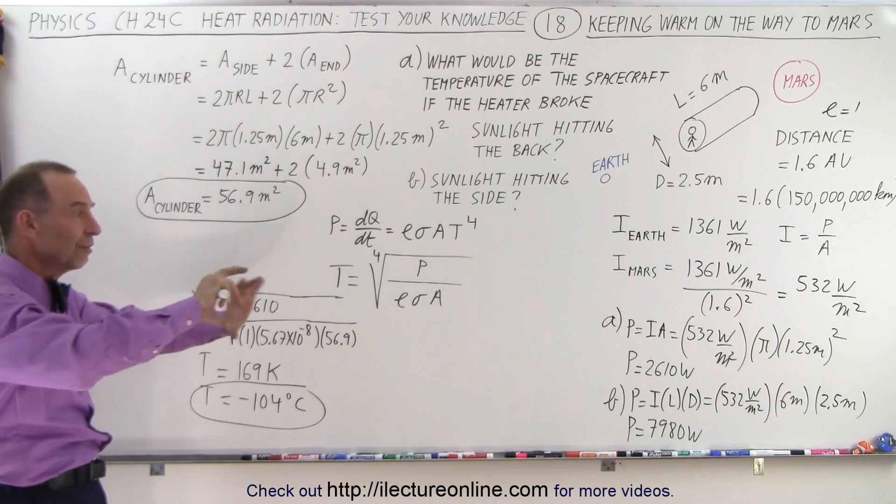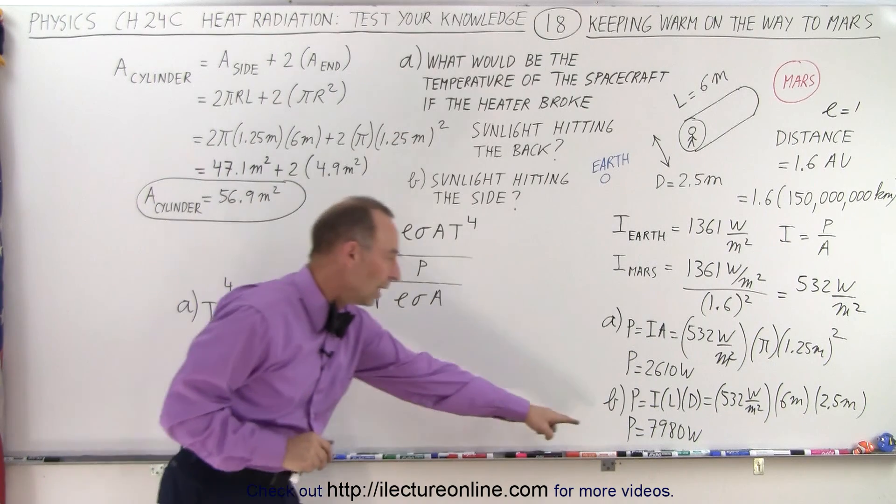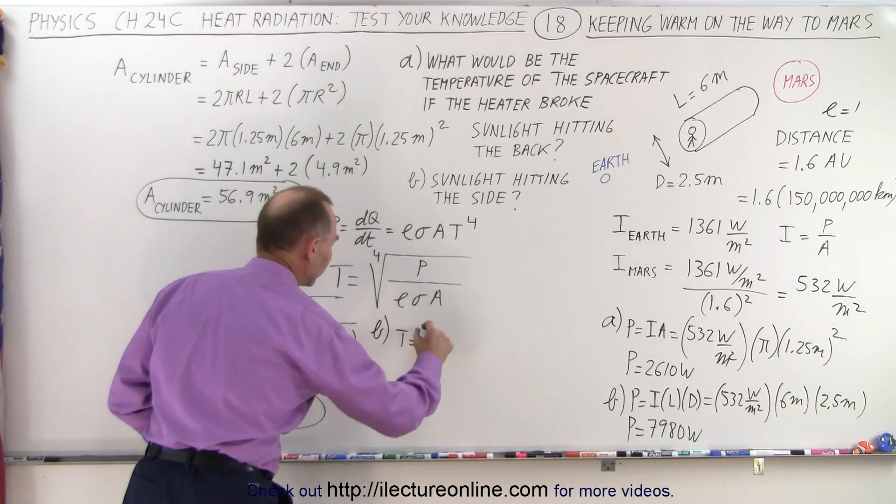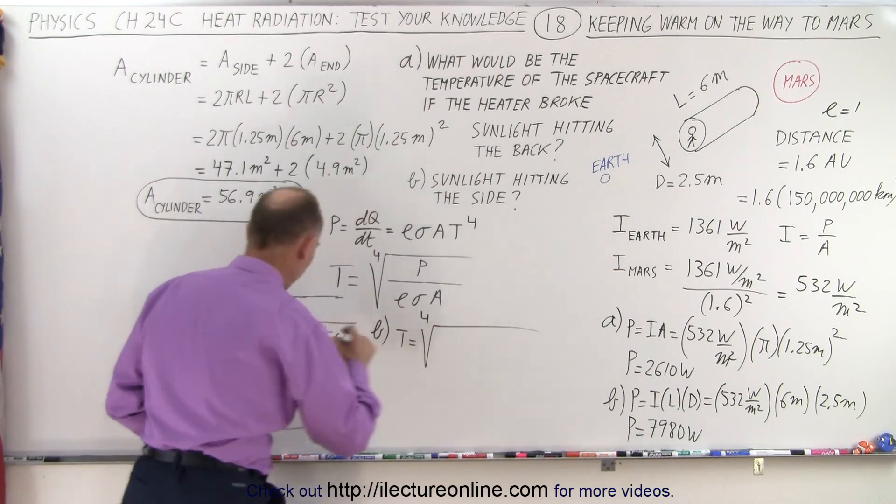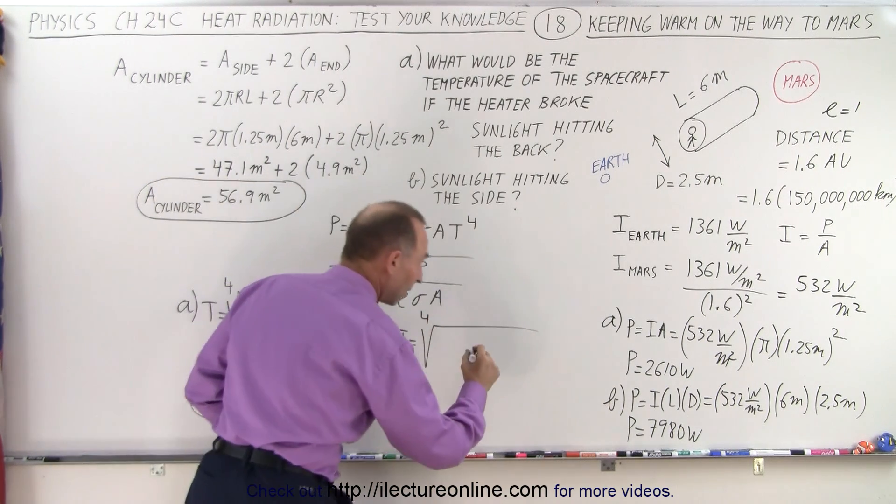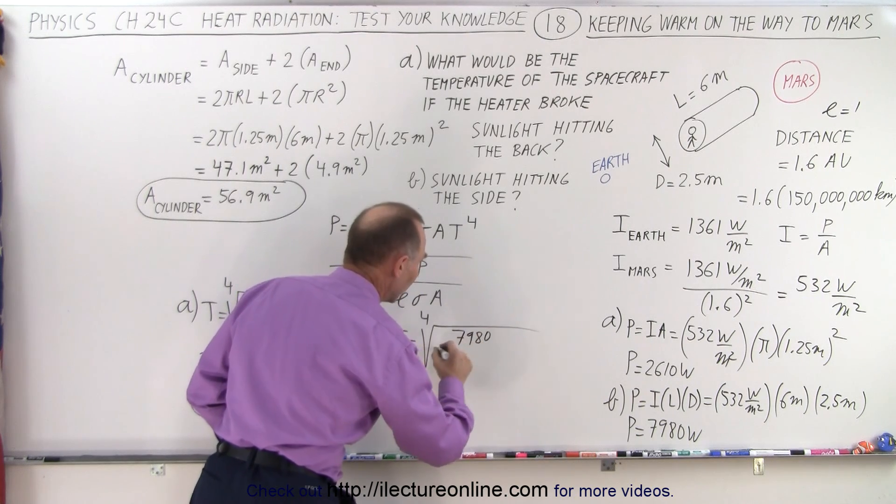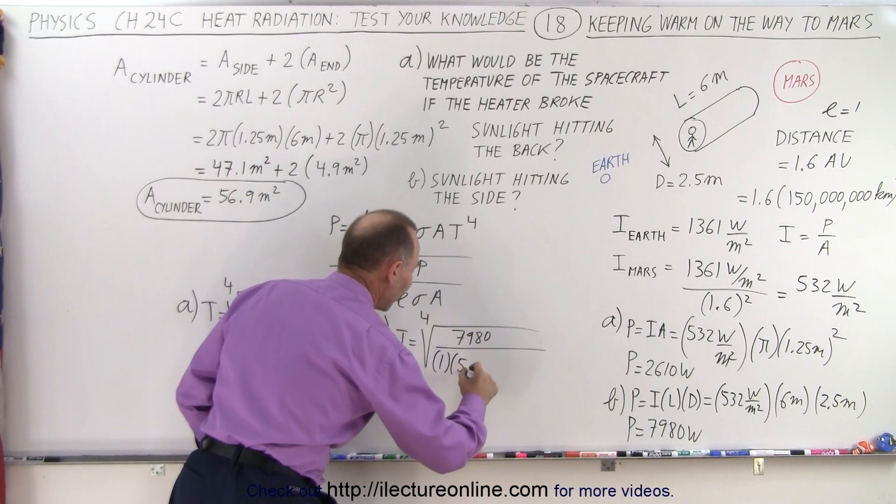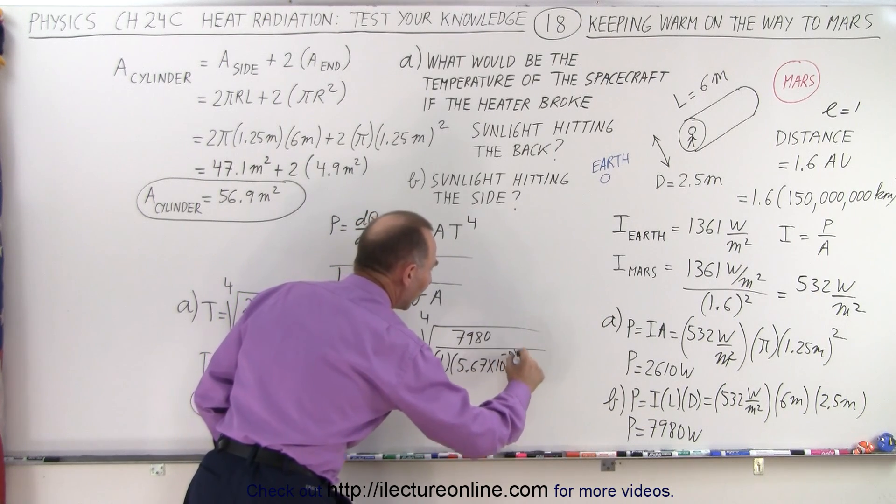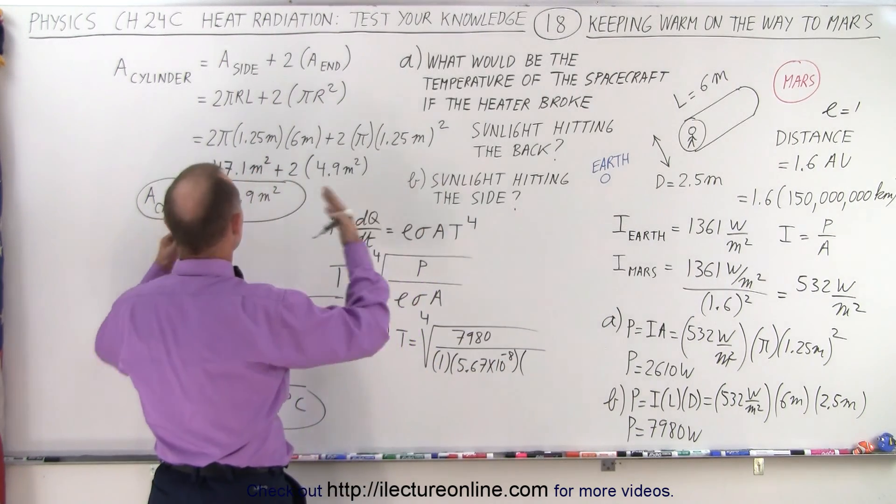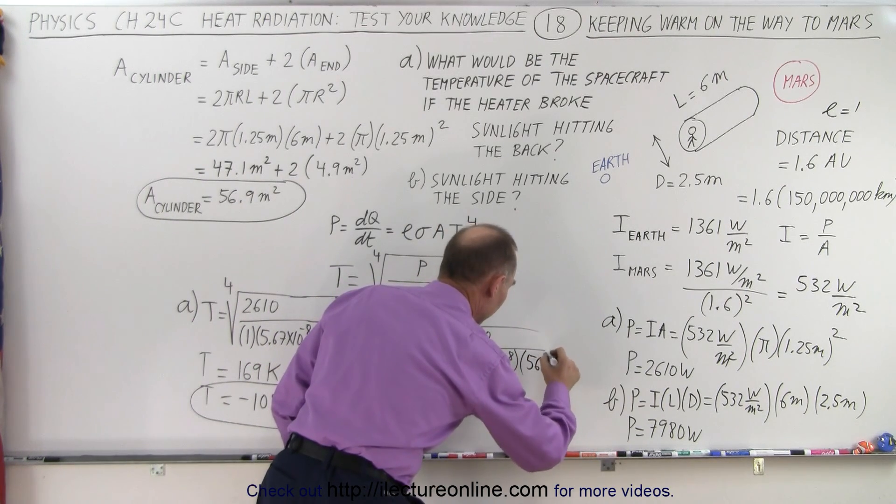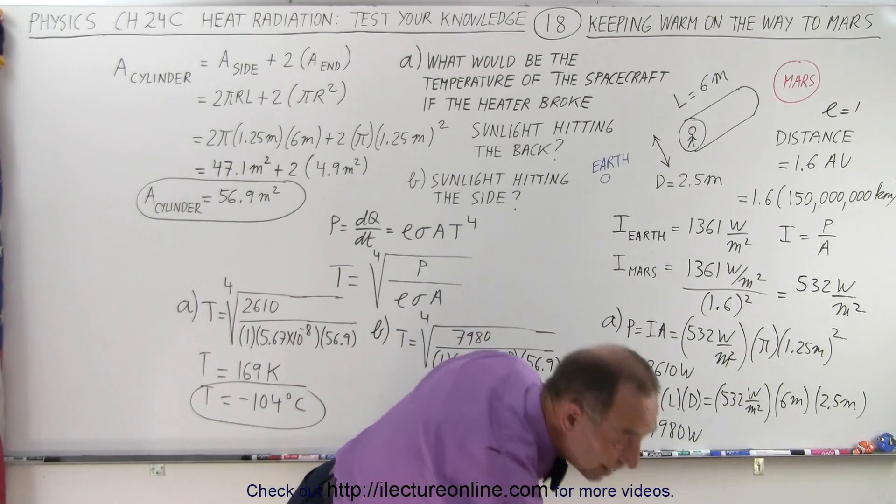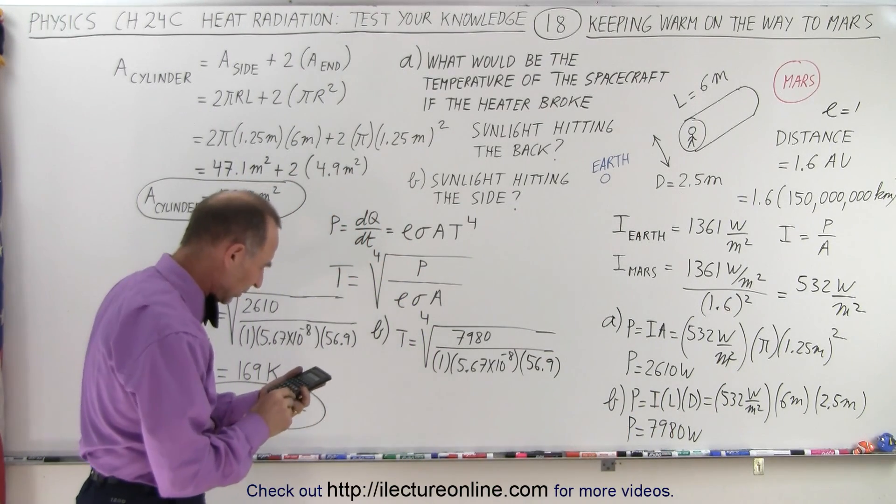So now the whole side receives sunlight. Certainly we would then be warmer. So let's then do it for part B. And the temperature would be equal to the fourth root of the power. Now the power is going to be 7,980 watts divided by emissivity 1, sigma 5.67 times 10 to the minus 8, and the whole surface area radiating the heat. Okay, 56.9, like that.